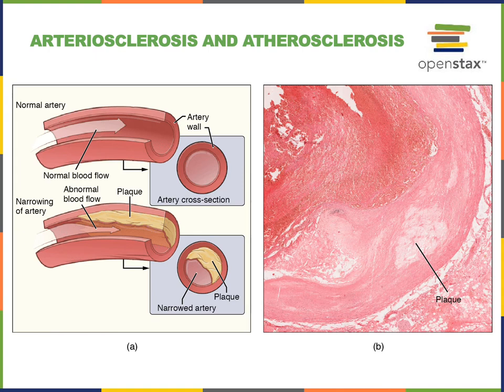As the plaque continues to expand, the lumen where blood flows through the artery becomes more and more narrow, making it more difficult for blood to flow through. Just having a narrowed artery as a result of atherosclerosis could contribute to increased blood pressure, making it more difficult for blood to flow through the blood vessels and requiring greater pressure to enable sufficient blood flow.